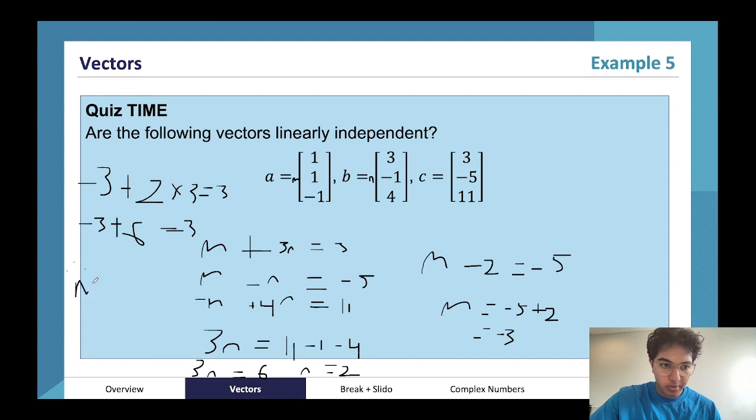Therefore, since there exists an m and an n, they are linearly dependent. So they are LD, linearly dependent.